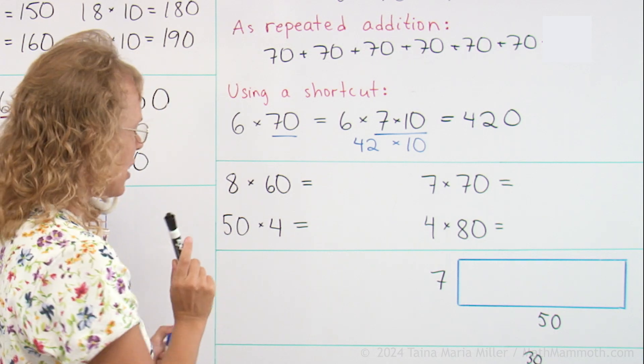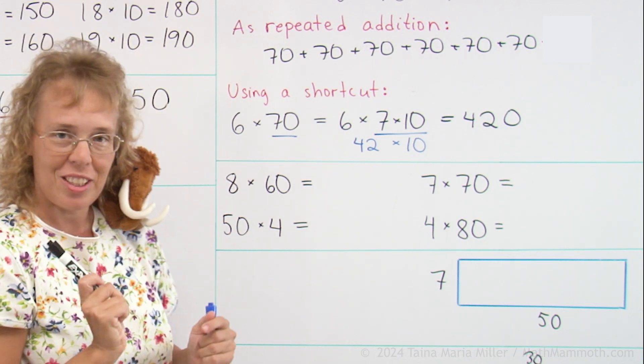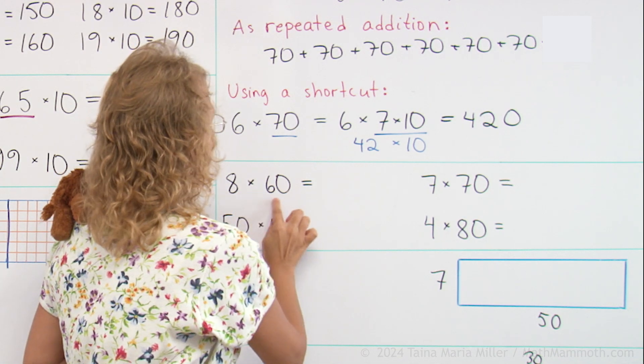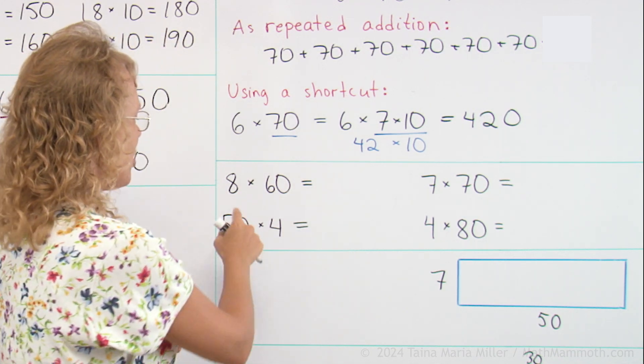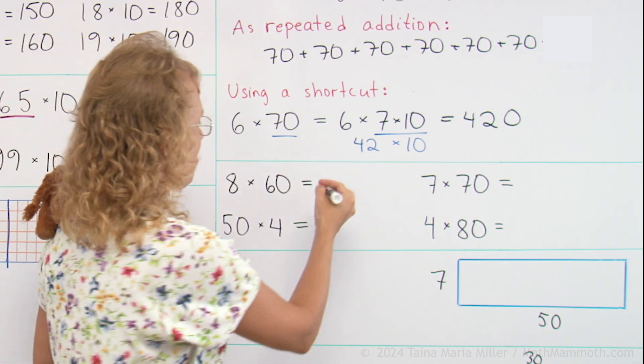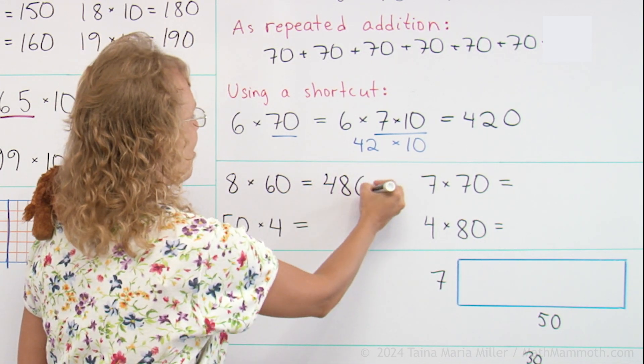Ready to practice a little? Can you solve these using the shortcut? 8 times 60. Go 8 times 6. 48. And then tag a 0 there.